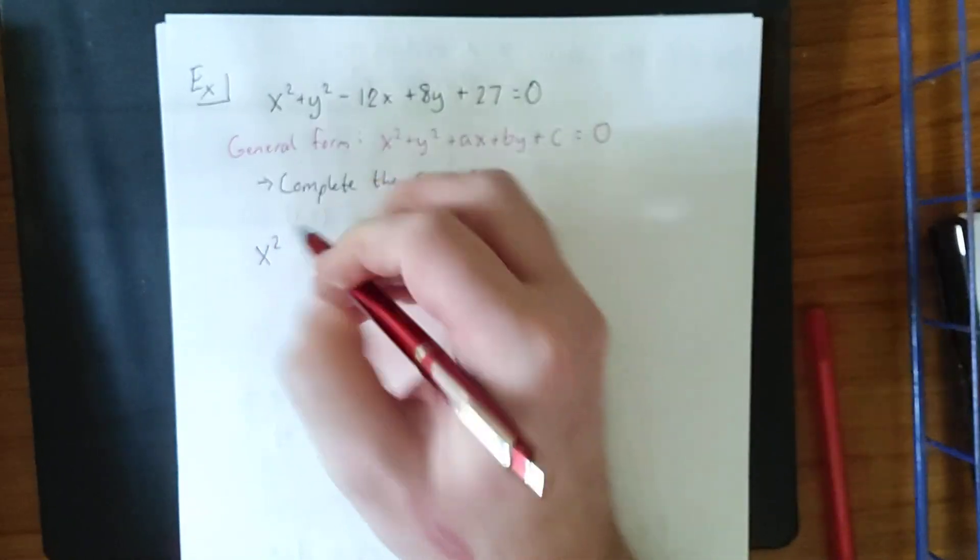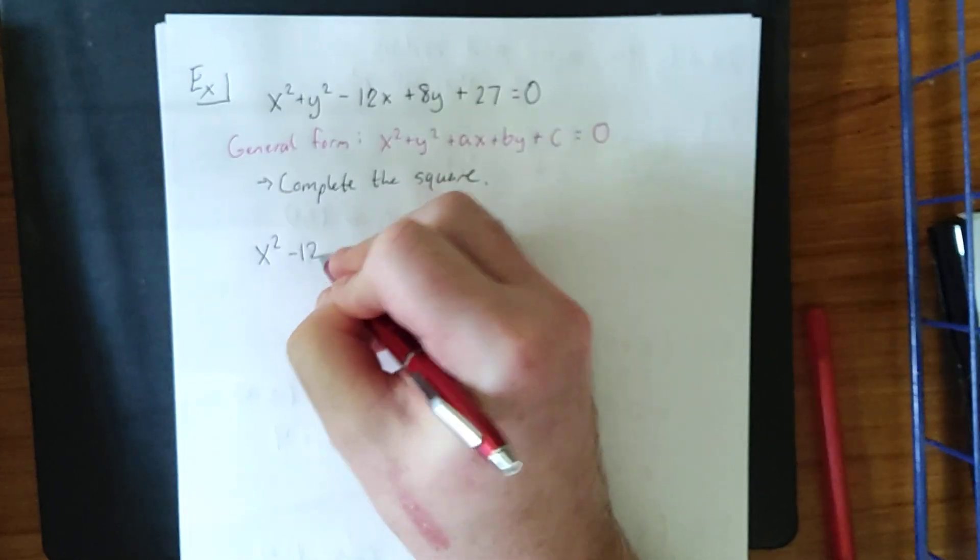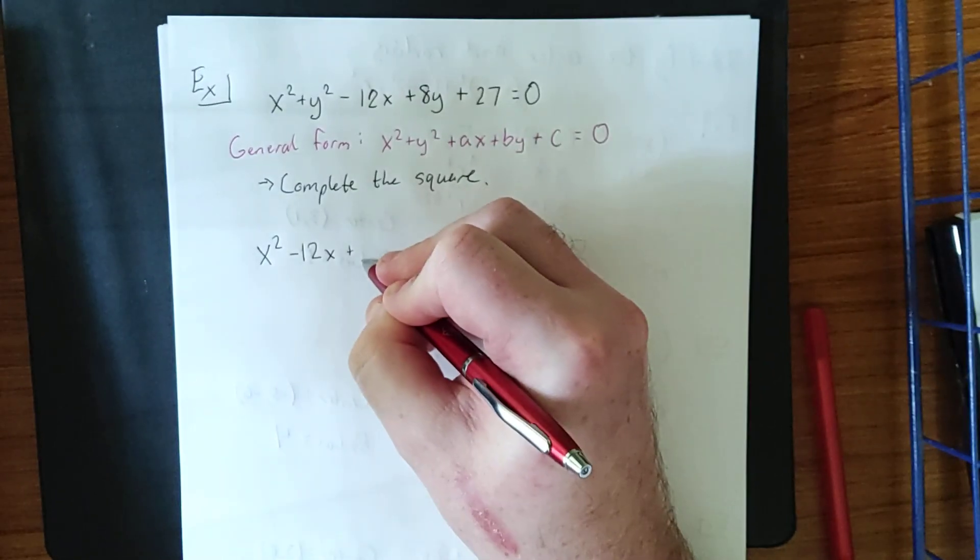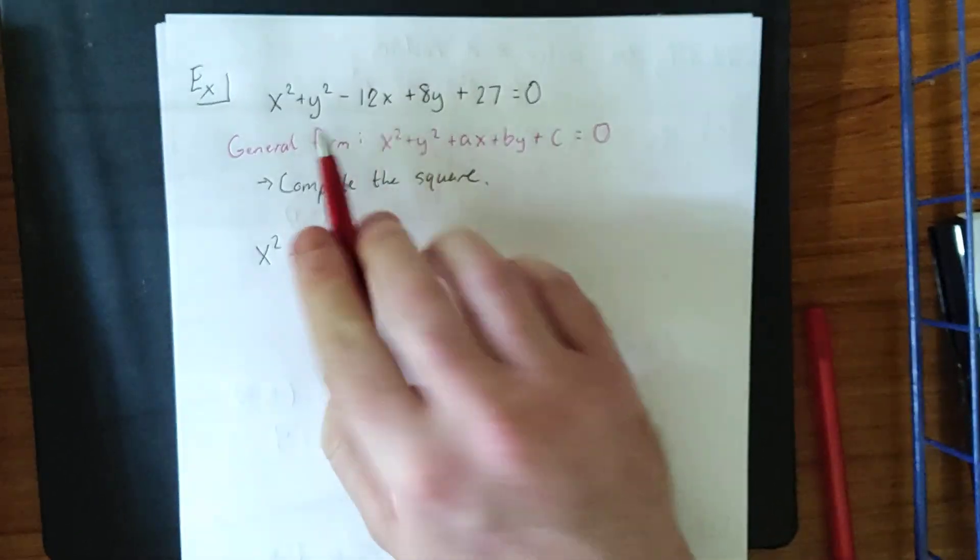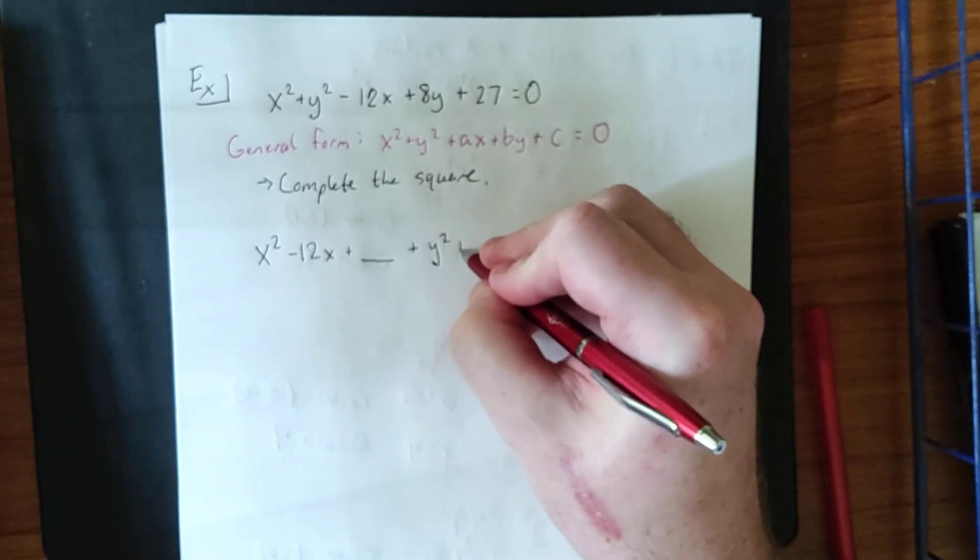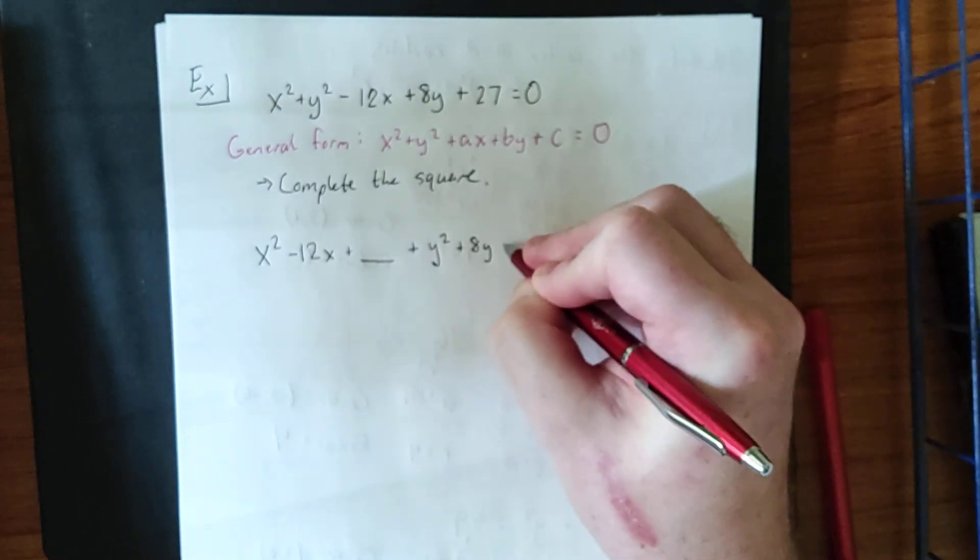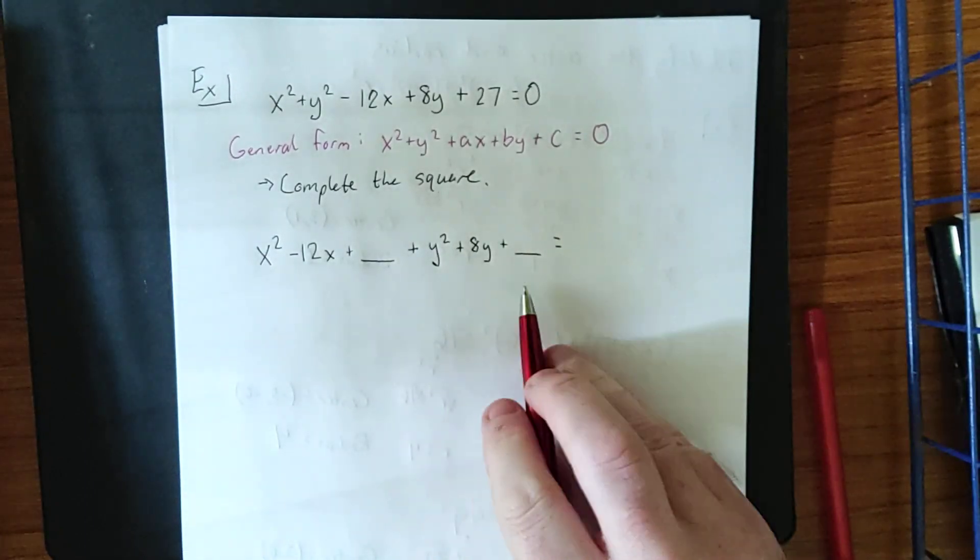I'm going to put the x squared term together with the x term. So x squared minus 12x plus, and then we'll leave a little blank for where we complete the square. Then we'll group all the y terms together. We have a y squared term, and we have a plus 8y term.